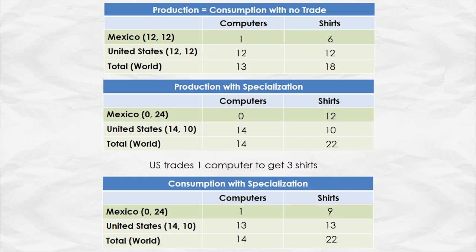Total production is the same, but notice what has happened to consumption with specialization and trade compared to when there was no trade. When there was no trade, Mexico consumed one computer and six shirts. Now they're consuming one computer and nine shirts — Mexico is better off by three shirts. The United States was consuming 12 computers and 12 shirts; now they're consuming 13 of each. The United States is better off by one computer and one shirt.